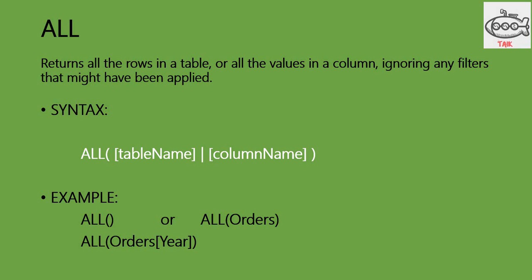The syntax is: ALL with brackets where you put the table name or the column name. Examples: ALL with empty brackets removes all filters everywhere, but this can only be used to clear the filter, not to return the table. The next form is ALL with a table name, or you can put the table with a column name.